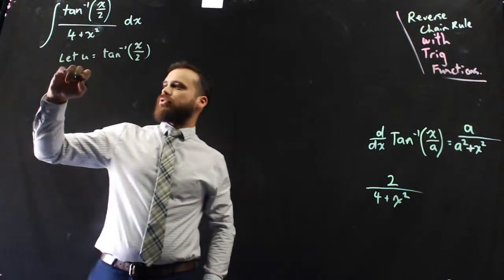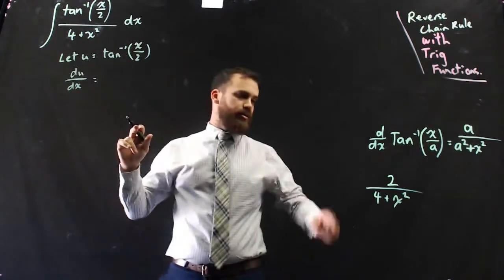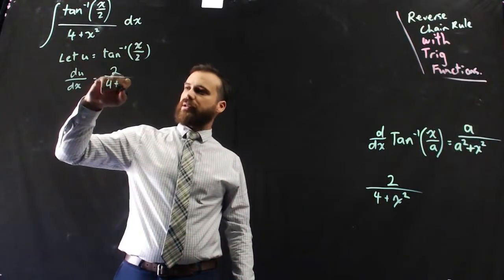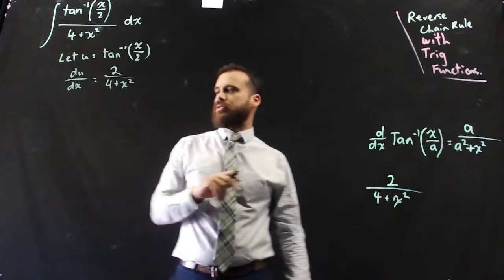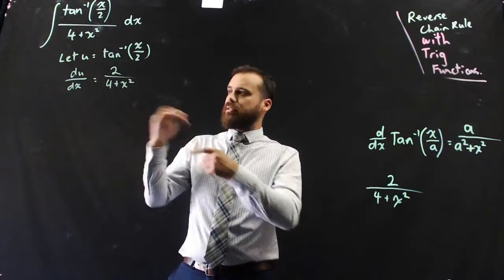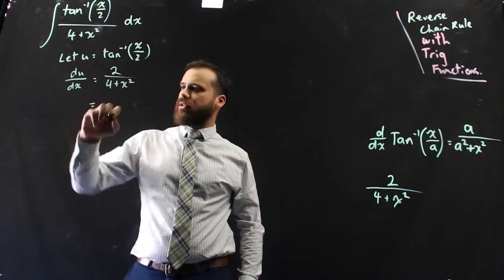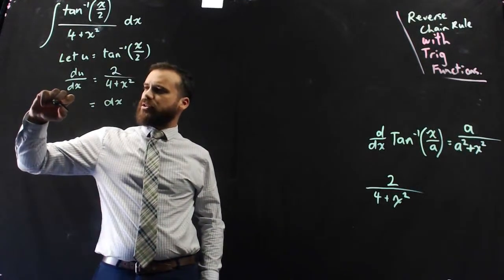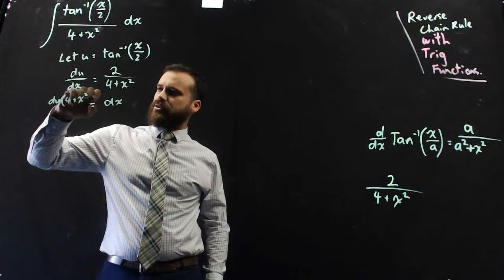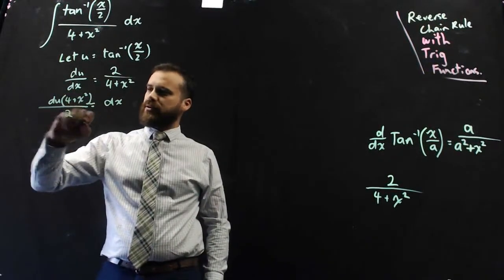So, okay, now the derivative of u with respect to x, again, that's 2 over 4 plus x squared. Let's rearrange that to make derivative of x the subject. This is the first time we've had like a fraction going on here. dx, it's going to be du, 4 plus x squared, over 2.